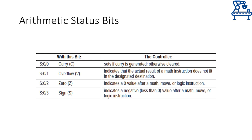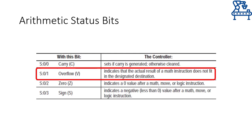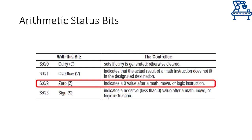There are a few results stored in the status register of the PLC that are imperative for understanding the results generated by mathematical instructions. The table shows the first 4 bits of word 0 of the status register, called arithmetic status bits. Bit 0 is the carry bit, set if the mathematical operation generates a carry. Bit 1 is the overflow bit, set if the actual result in the math register cannot fit in the destination address. Bit 2 is the zero bit, set if the result yields zero. Bit 4 is the sign bit, set if the result is negative.